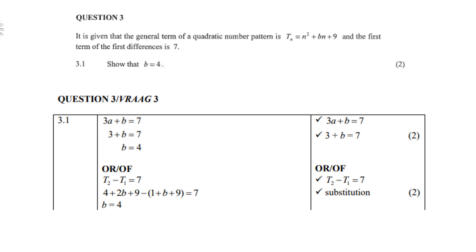Question 3.1: show that b equals 4. From the quadratic formula, the first term of the first difference is 3a plus b equals 7. Since the coefficient a equals 1, we get 3 plus b equals 7, therefore b equals 4. Alternatively, term 2 minus term 1 equals 7: (4 plus 2b plus 9) minus (1 plus b plus 9) equals 7, which also gives b equals 4.